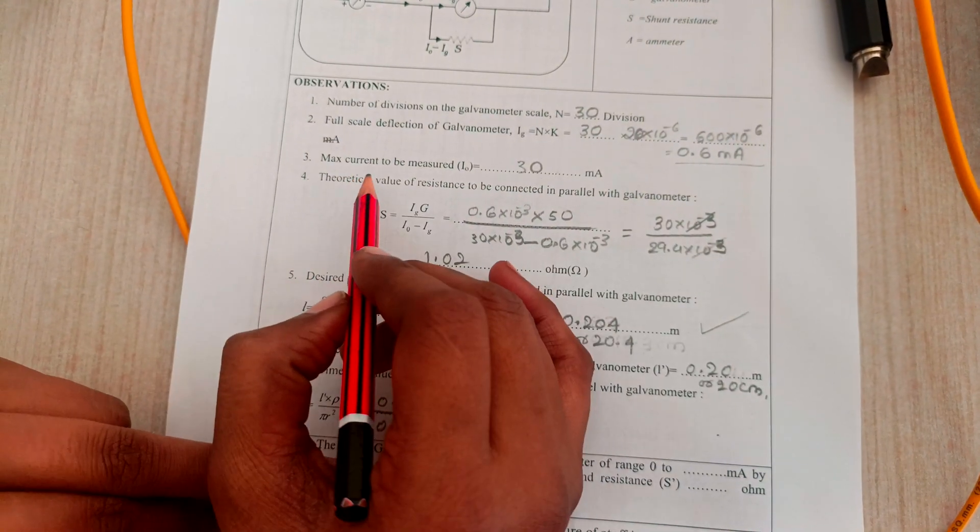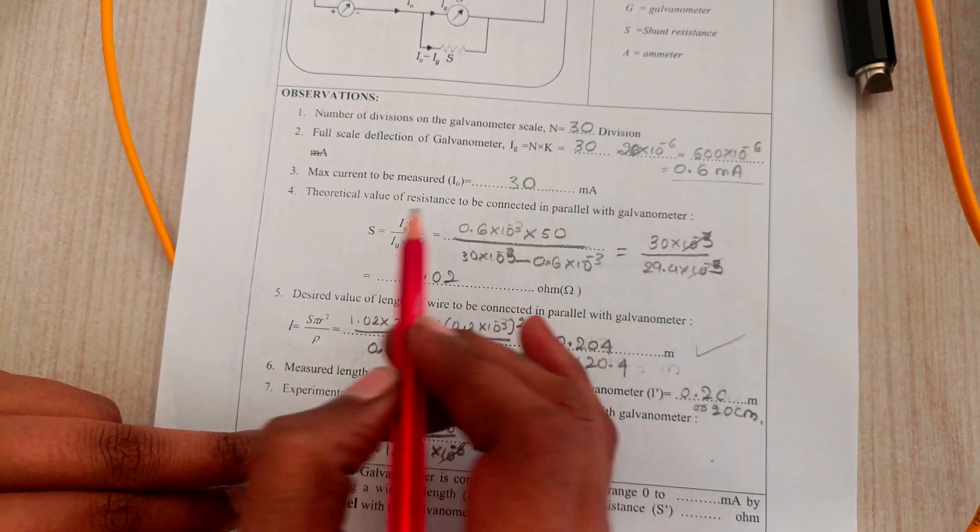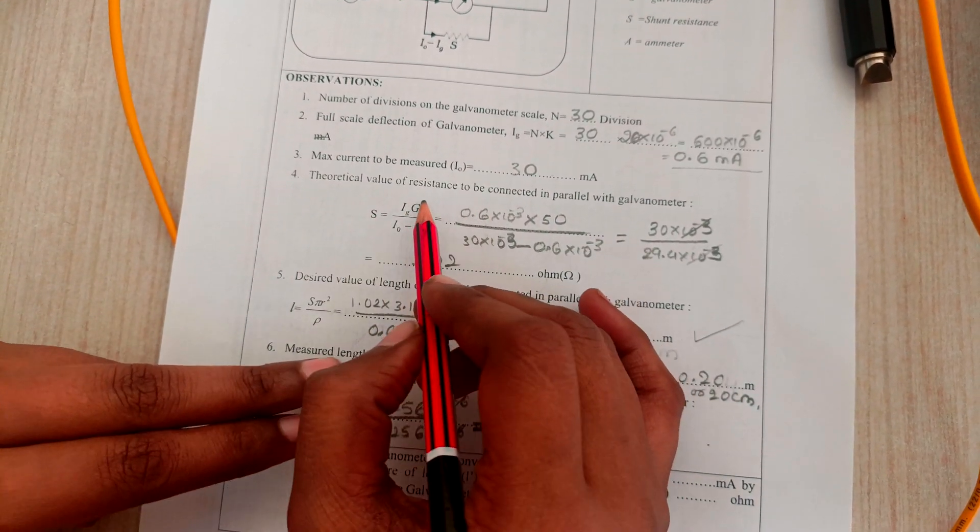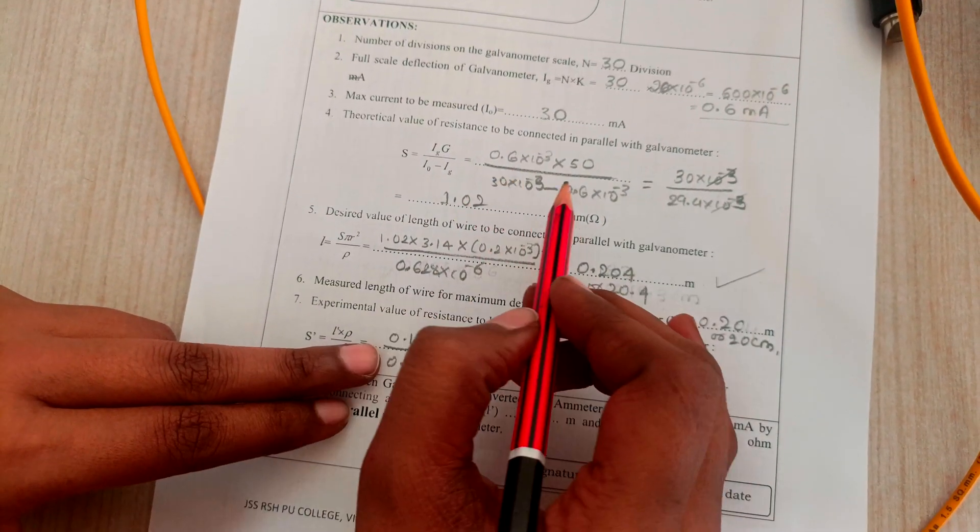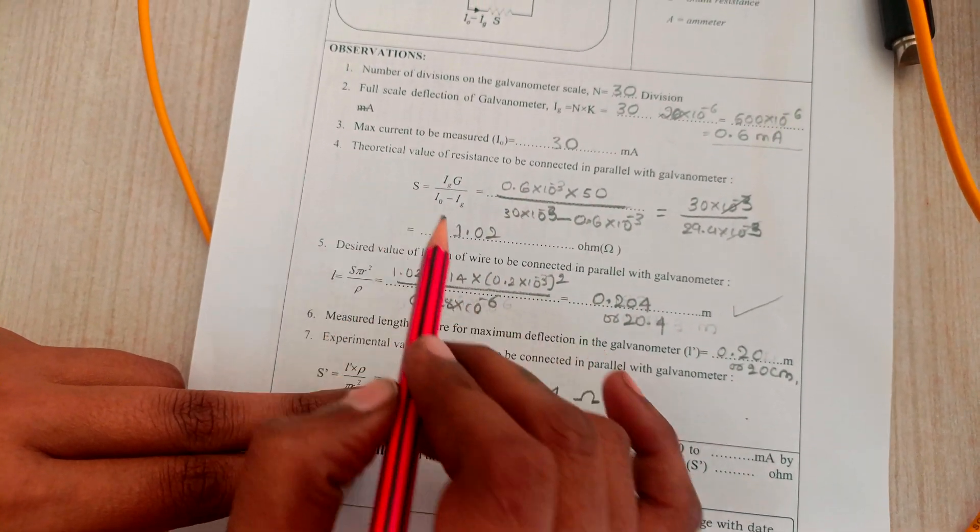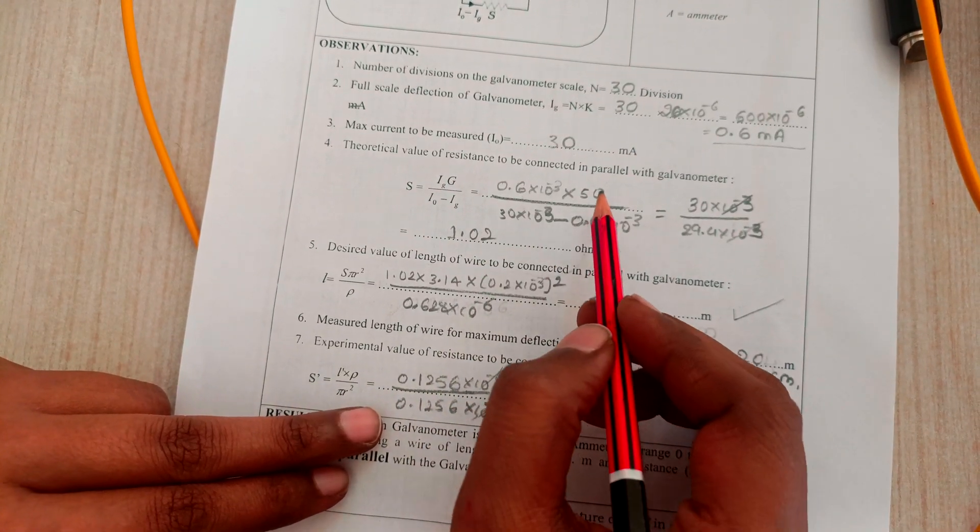Maximum current to be measured is 30 milliamps. Theoretical calculation for resistance that has to be connected in parallel with the galvanometer comes out to be S = 1.02 ohms. You can check the calculation using the substitution part.